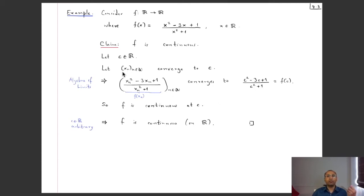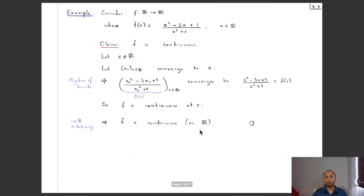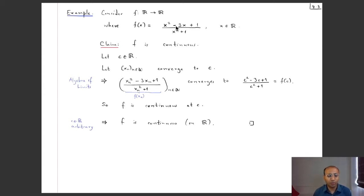So for any sequence xₙ converging to c, we have f(xₙ) → f(c). By the characterization theorem, f is continuous at c. Since c was arbitrary, f is continuous on all of ℝ. This example anticipates the theorem on algebra of continuous functions, which says that algebraically combining continuous functions again yields a continuous function — that is the theorem we will learn next.